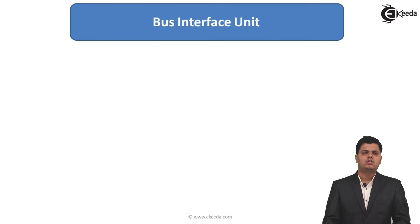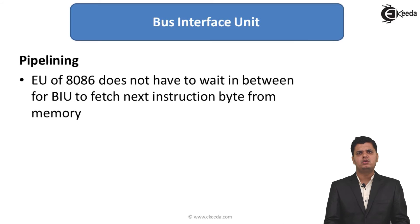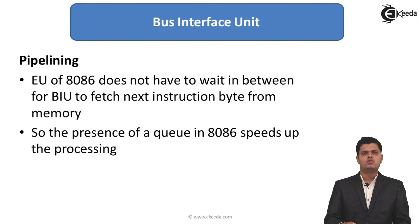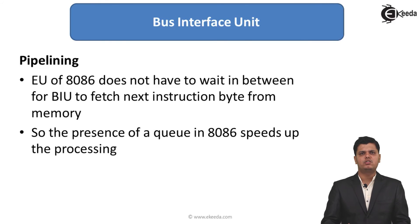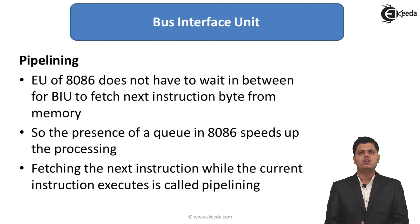With this simultaneous operation, pipelining is employed. The execution unit of 8086 does not have to wait for the bus interface unit to fetch the next instruction byte from memory — it simply takes the data from the instruction queue. The presence of the queue in 8086 speeds up processing, saving time that would otherwise be spent sending addresses. Fetching the next instruction while the current instruction executes is called pipelining.